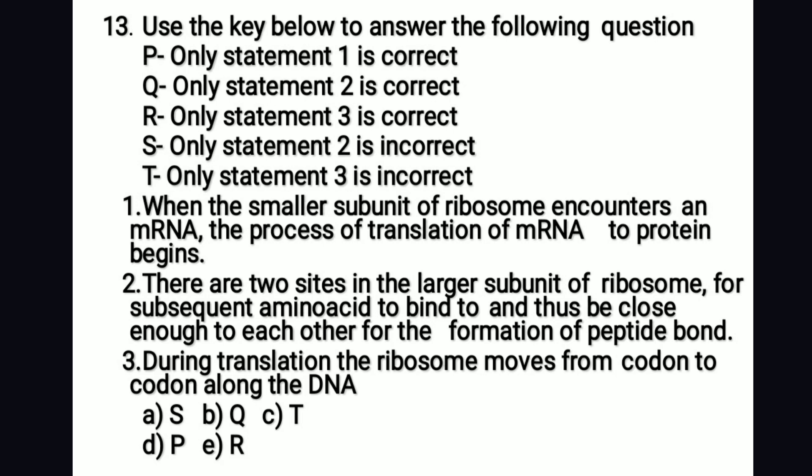Use the key to answer the following. Statement 1: when the smaller subunit of the ribosome encounters an mRNA, translation begins — true. Statement 2: there are two sites in the larger subunit of the ribosome — P-site (peptidyl) and A-site (aminoacyl); A-site for incoming tRNA, P-site for outgoing tRNA — true. Statement 3: during translation, the ribosome moves from codon to codon along the DNA — incorrect; it moves along the mRNA. So the right answer is option C: only statement 3 is incorrect.